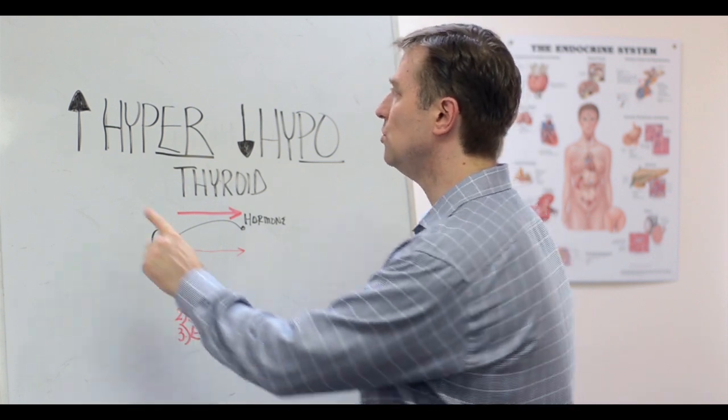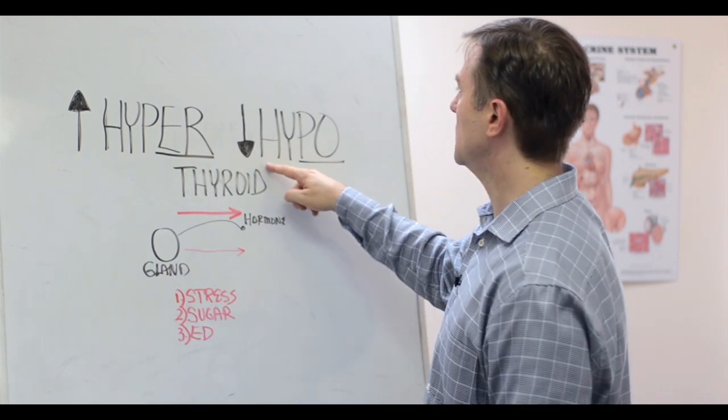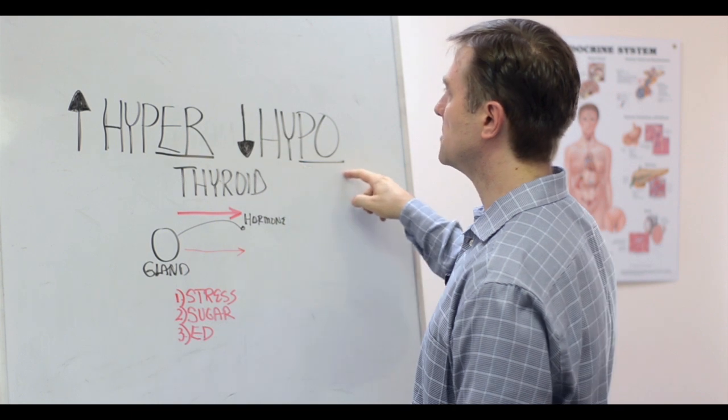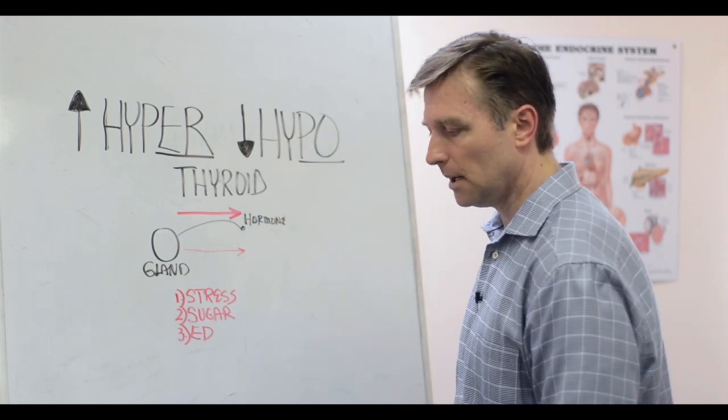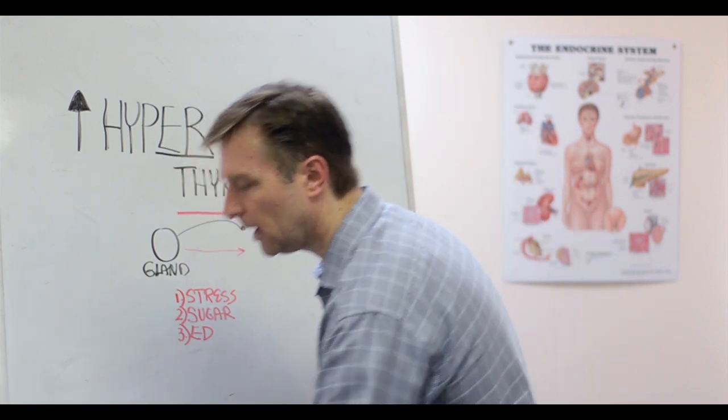Hyper means too much, excess, and hypo means a deficiency or not enough of something. So if we're relating it to the thyroid, for example, let's just take a look at how this works.